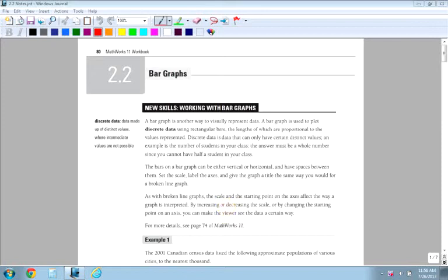Section 2.2 is bar graphs. We're going to look at bar graphs and how they work instead of line graphs, which we looked at last time. A bar graph is a different way, another way to visually represent the data, and a bar graph is used to plot discrete data. Discrete data means not everything is included. It couldn't be like 0.555523. It's got to be something that's discrete, that has definite values.